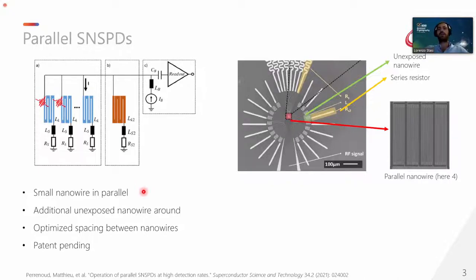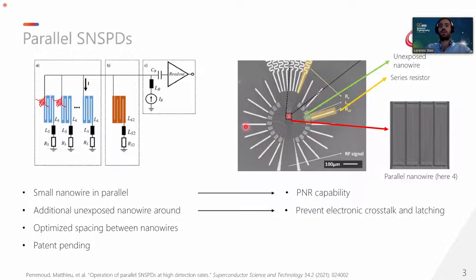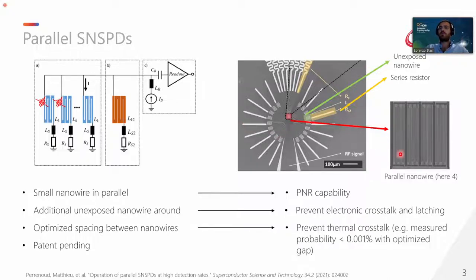So the idea is to have many smaller nanowires electrically connected in parallel under the illumination area of the fiber here, added in red. And based on the number of the pixels, we can achieve the corresponding PNR capability. Then, in order to prevent electronic cross-talk due to the current redistribution after one of the pixels have clicked, we have added in parallel all those nanowires, which are outside of the fiber. So they cannot receive light and can never turn resistant, such that they have the task to accept this current redistribution, so we can prevent the electronic cross-talk or latching of the overall detector. And lastly, we have also optimized the gap between the pixels, in such a way that thermic cross-talk can be almost efficient.